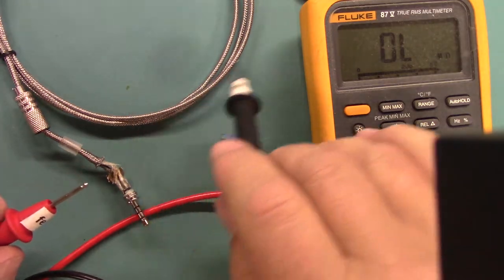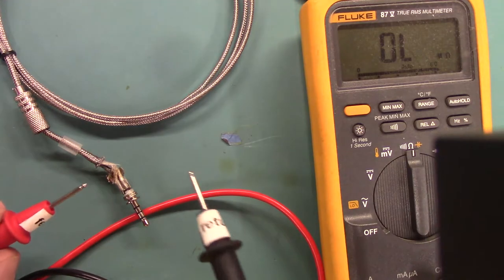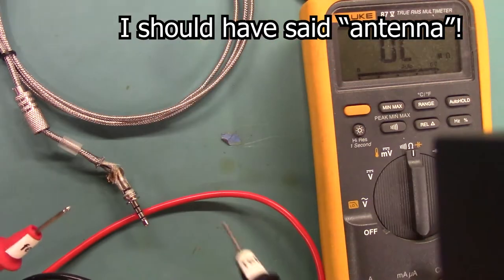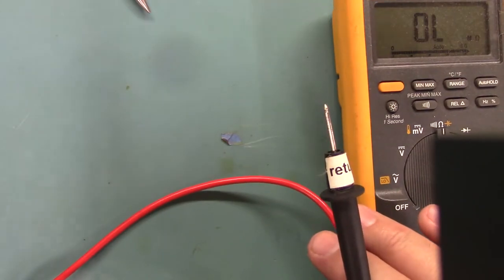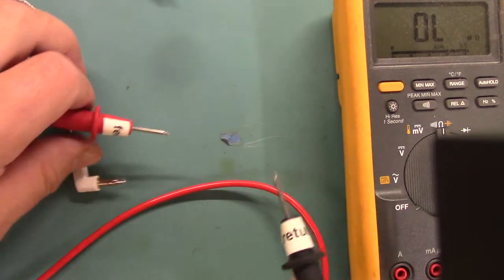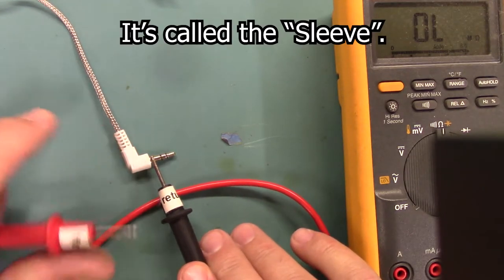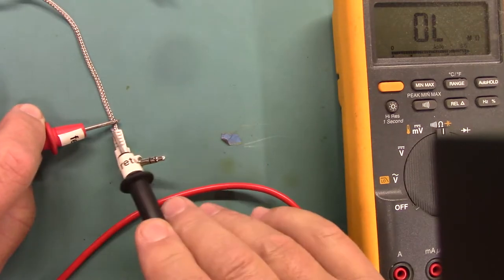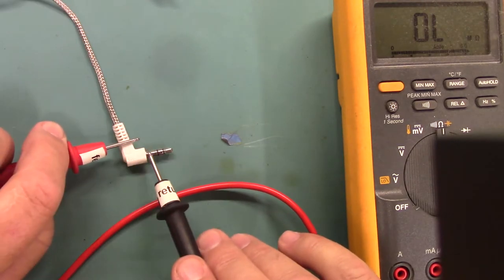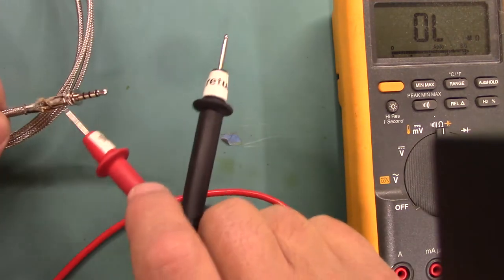This is the ground barrel right there on the connector, and you can see these are not connected. This sheath is not connected to this ground in any way. So when they connected this sheath to this ground right here, that was a no-no. They're not supposed to do that, and they did.